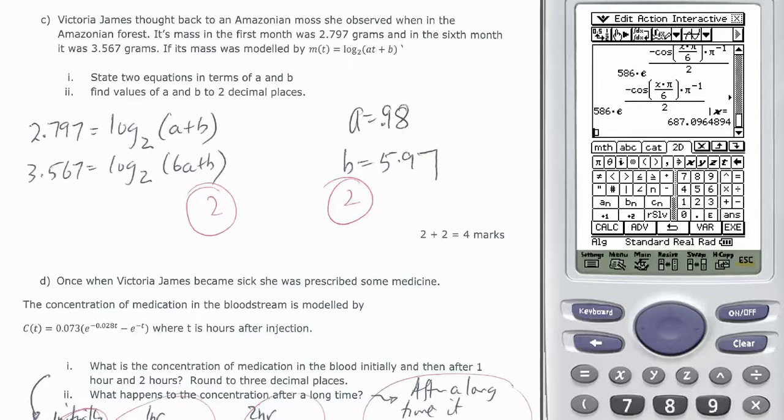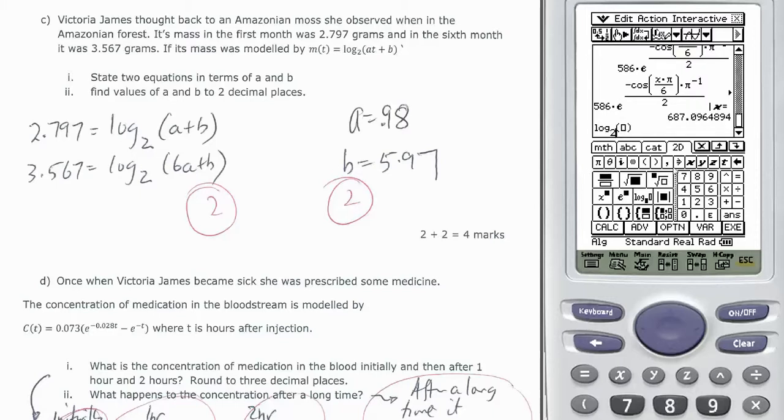So let's put that in the calculator. It's log base 2. So 2D, I'll use log base 2 and I'm going to have AT. So I'll do AX. You guys want to graph it. Plus B.